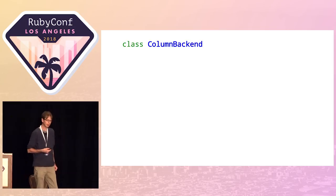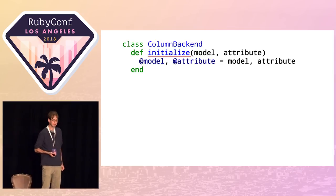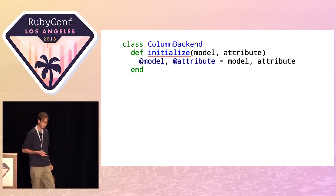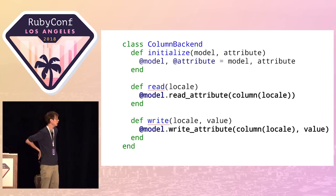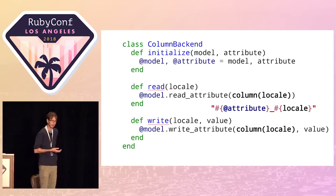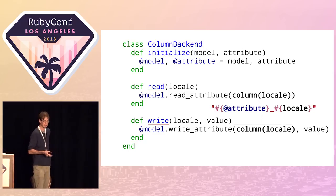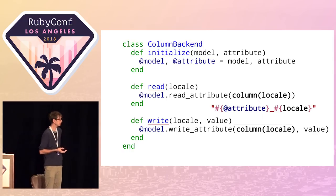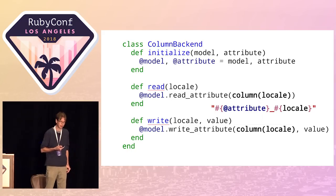Now we define this backend class. This is a bit like TDD: we wrote the protocol for the framework, now we write the code that satisfies it. We need an initializer — it receives an instance of the model and an attribute name, and assigns those to instance variables. Then we define `read` and `write`. This is actually pretty simple: we have the attribute name, the model, and the language in the method argument. We take the language, append it to the attribute name — e.g., `title` becomes `title_en` — and call `read_attribute` on the model to get the column value. This is our column backend, encapsulating the translatable column strategy.